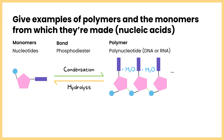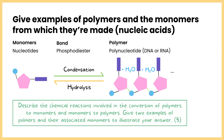RNA stays as a single polynucleotide strand, whereas DNA is made up of two polynucleotide strands. There has been an extended response question — a five-mark question — which encompasses everything in the monomers and polymers topic, from the 2019 A-level biology paper 1. It asks: describe the chemical reactions involved in the conversion of polymers to monomers and monomers to polymers, and give two examples of polymers and their associated monomers to illustrate your answer. That's something you can now have a go at.